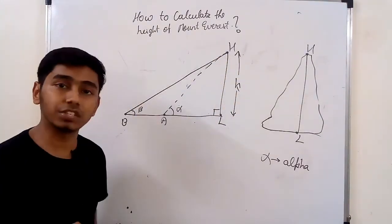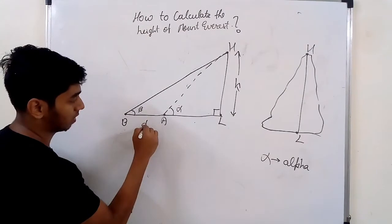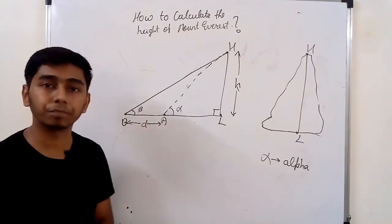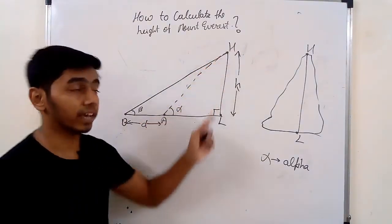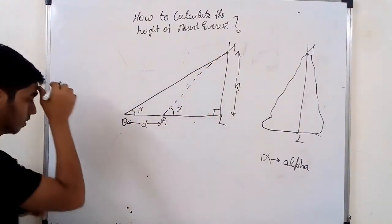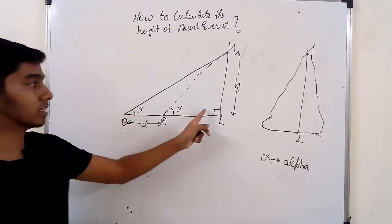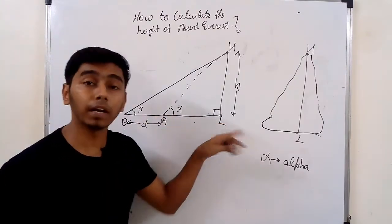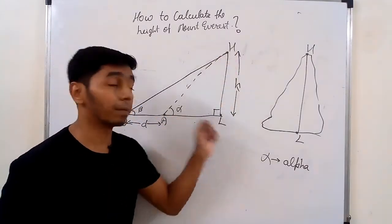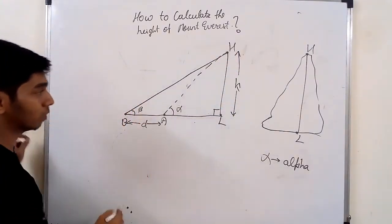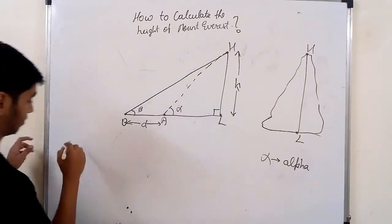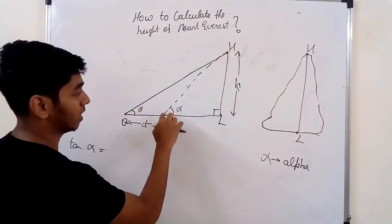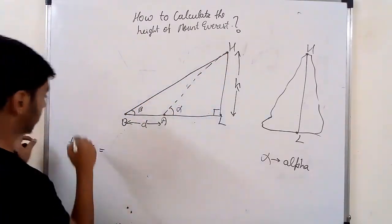So we have to find height H. Let's say distance AB is D. Now we're going to find H. We know this will be 90 degrees because the height of anything is perpendicular to the base. So let's find tan of alpha in triangle AHL. Tan alpha equals opposite HL upon adjacent AL, which is H upon AL.